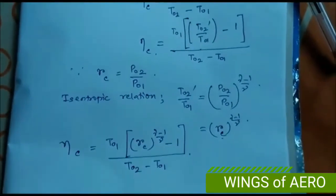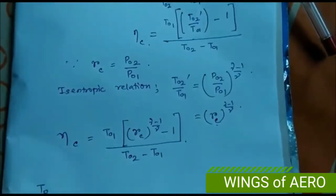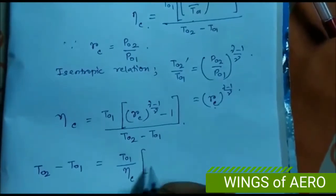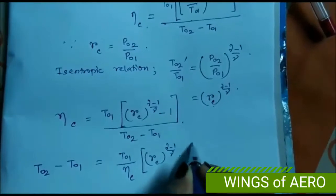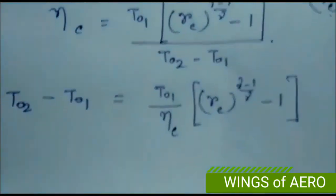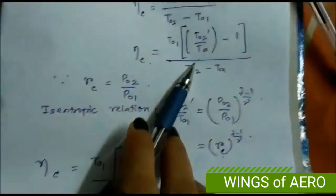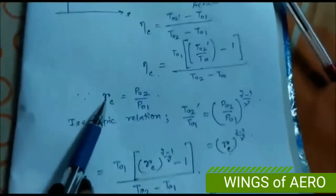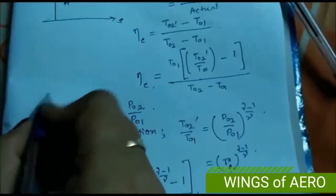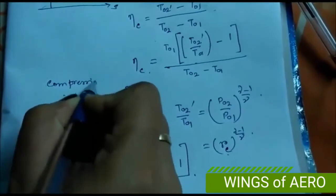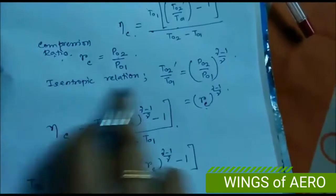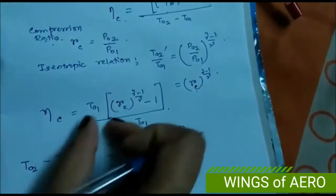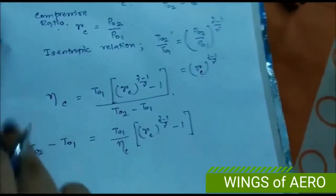Rearranging, T02 − T01 = (T01 / η_c) · [R_c^((γ−1)/γ) − 1]. This is often given directly in textbooks. The key steps are: identify the compression ratio P02/P01, apply the isentropic relation T02'/T01 = R_c^((γ−1)/γ), substitute R_c, then rearrange for the unknown temperature difference.